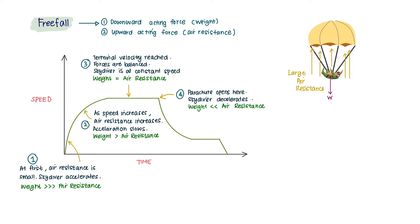The skydiver now decelerates. Eventually, the forces balance out again and a new slower terminal velocity is reached. Finally, the speed decreases until zero when the skydiver lands on the ground.